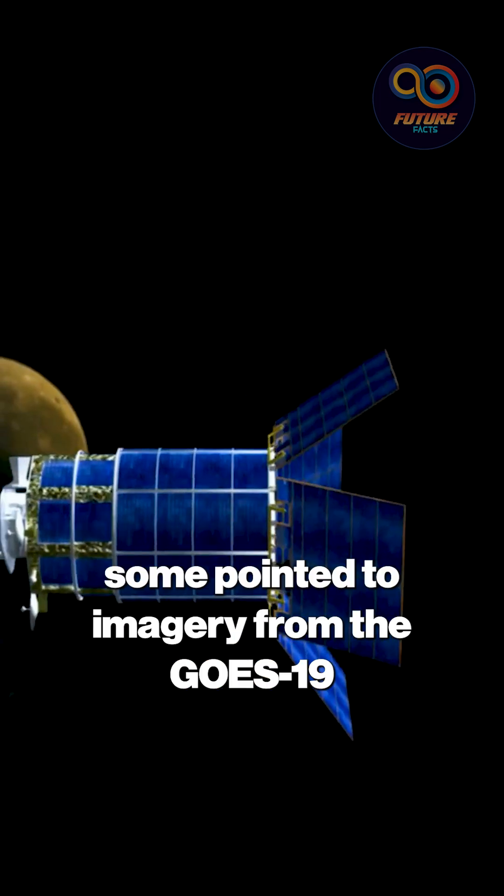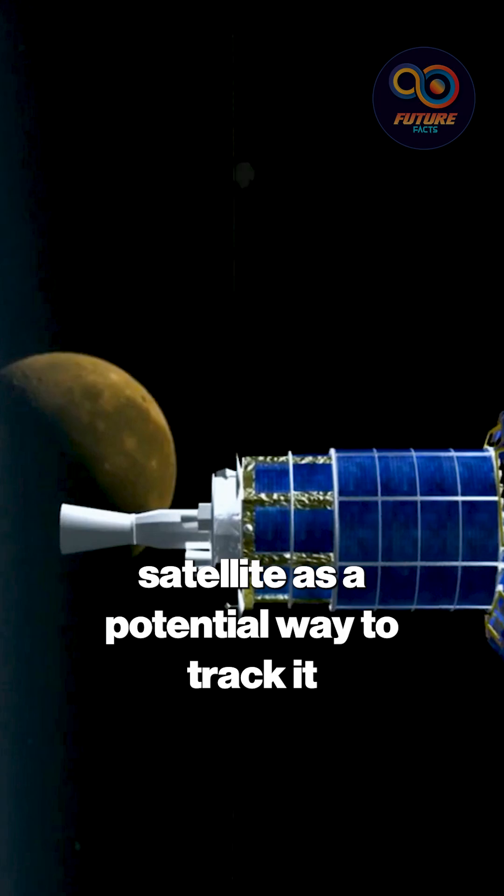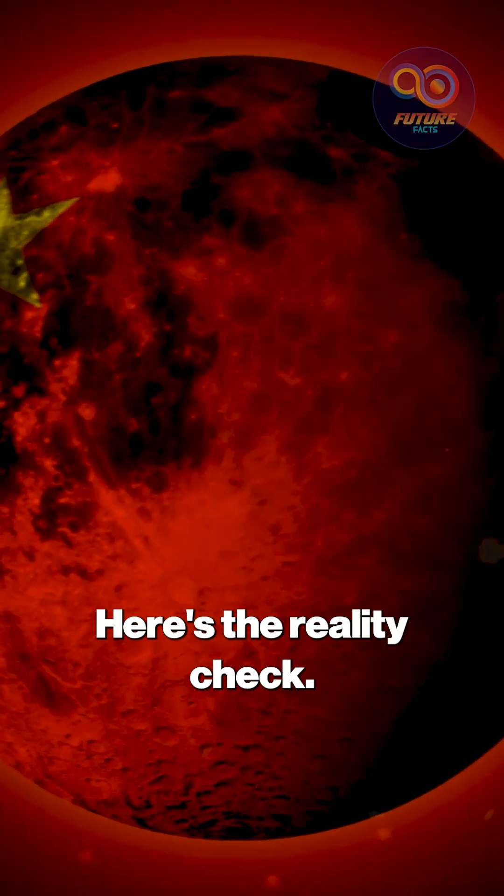As 3i Atlas neared the sun, some pointed to imagery from the GOES-19 satellite as a potential way to track it through the glare. Here's the reality check.